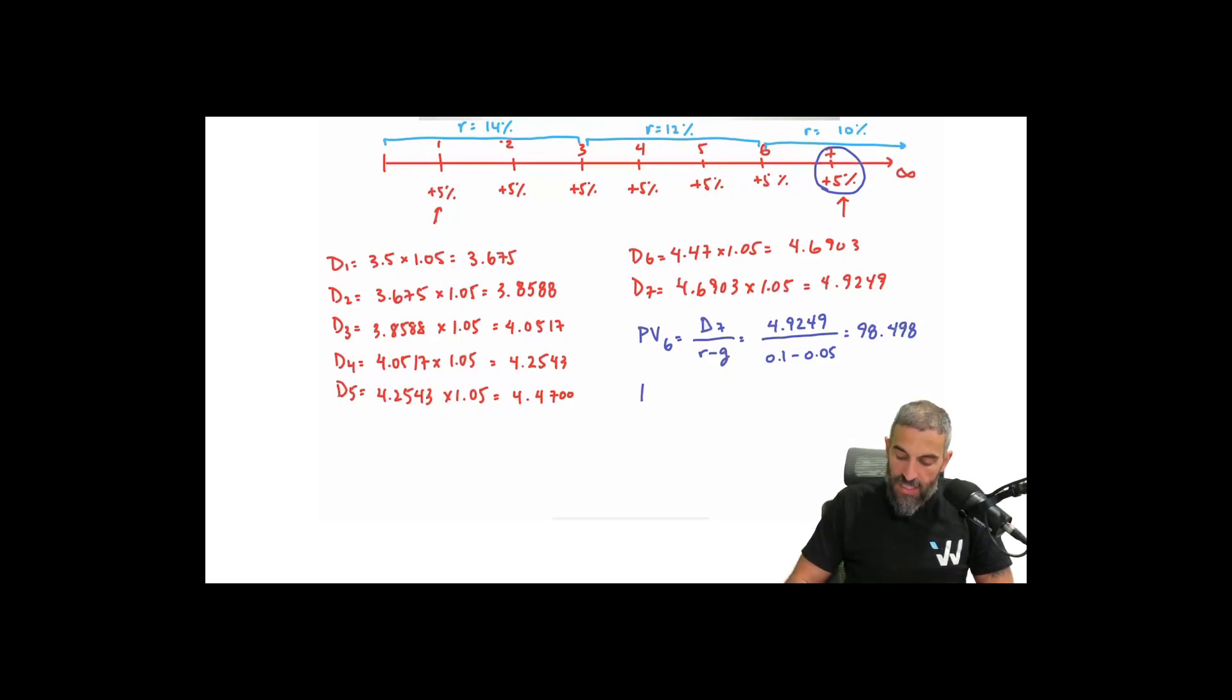And then I'm going to take that value and discount it all the way back to time 0. So by discounting it, so now we have all of our dividends up until time 6. We also have the present value of the stock at time 6.